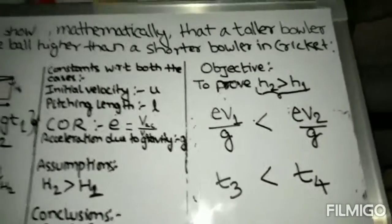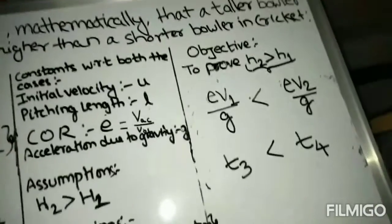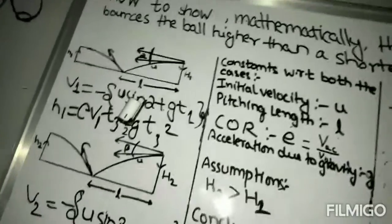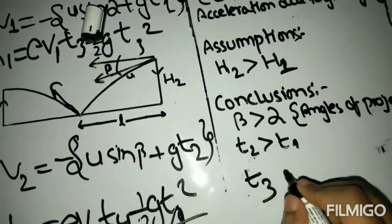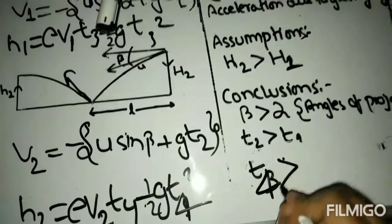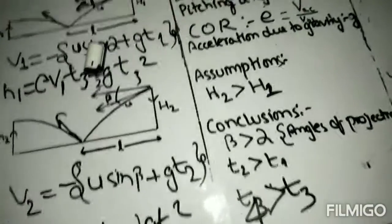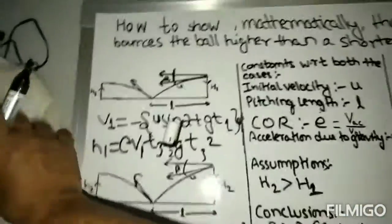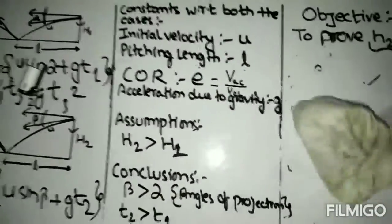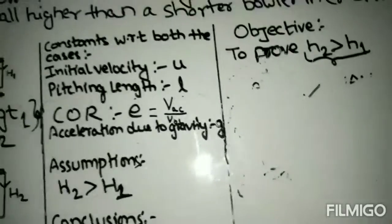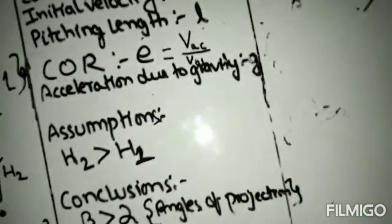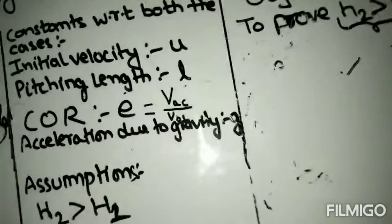So this is gonna be our final conclusion. Now we'll write it here. t4 is greater than t3. Now we have reached the final part of our solution, where we can prove h2 as greater than h1.